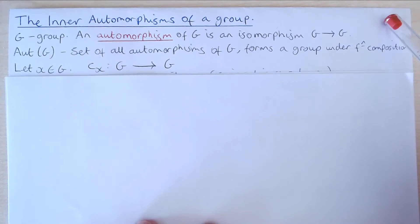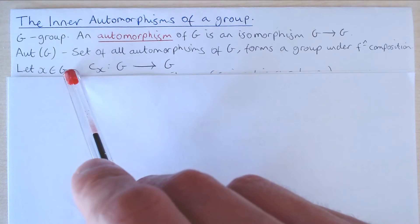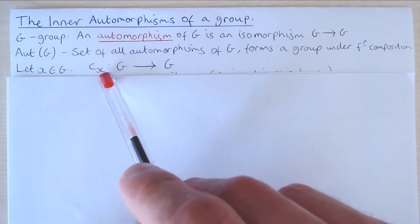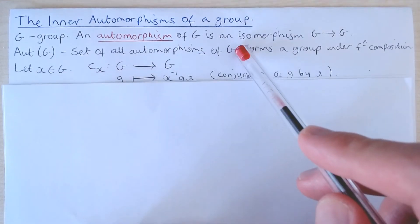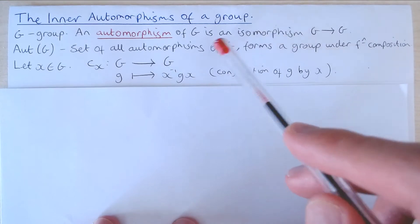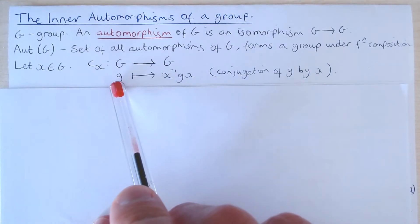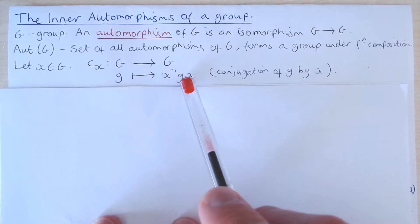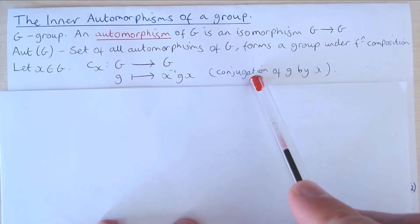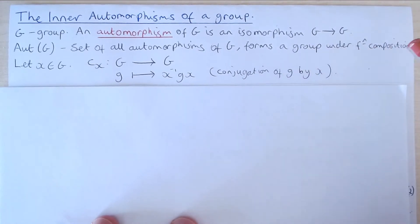Now let X be an element of the group G. There is a map C subscript X from G to itself defined as follows: the element G of the group G is sent to X inverse GX. This is commonly called conjugation of G by X.